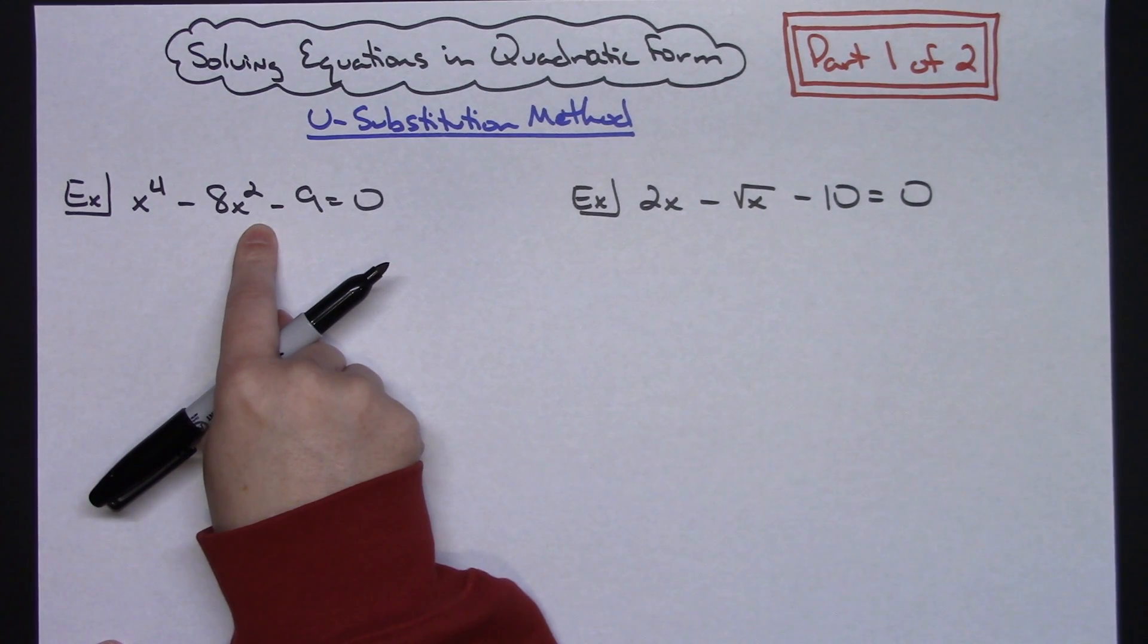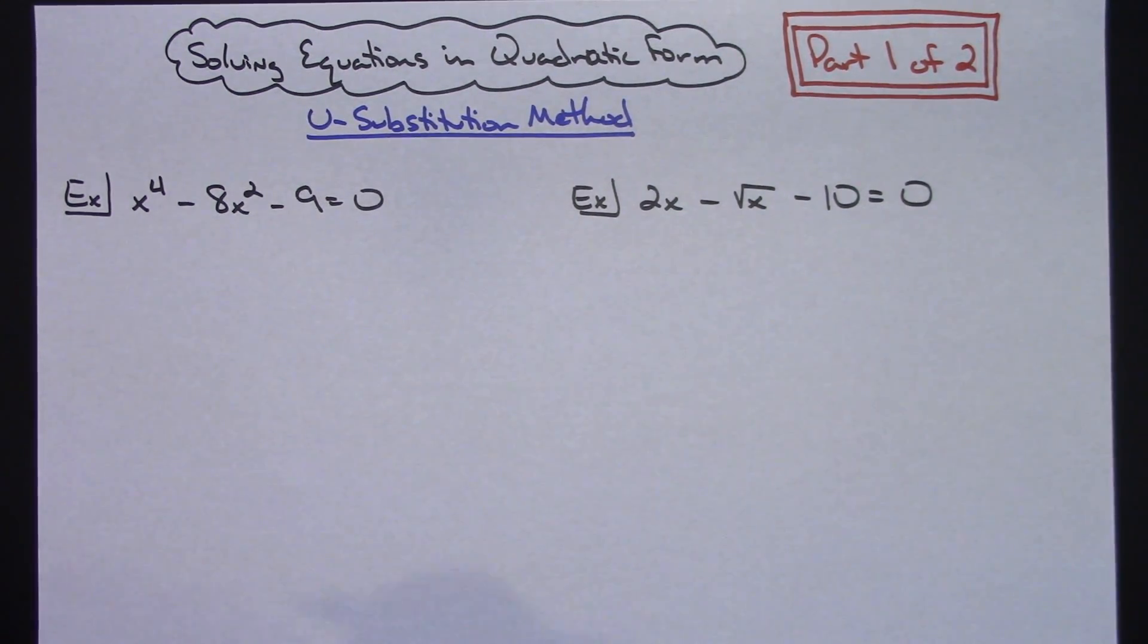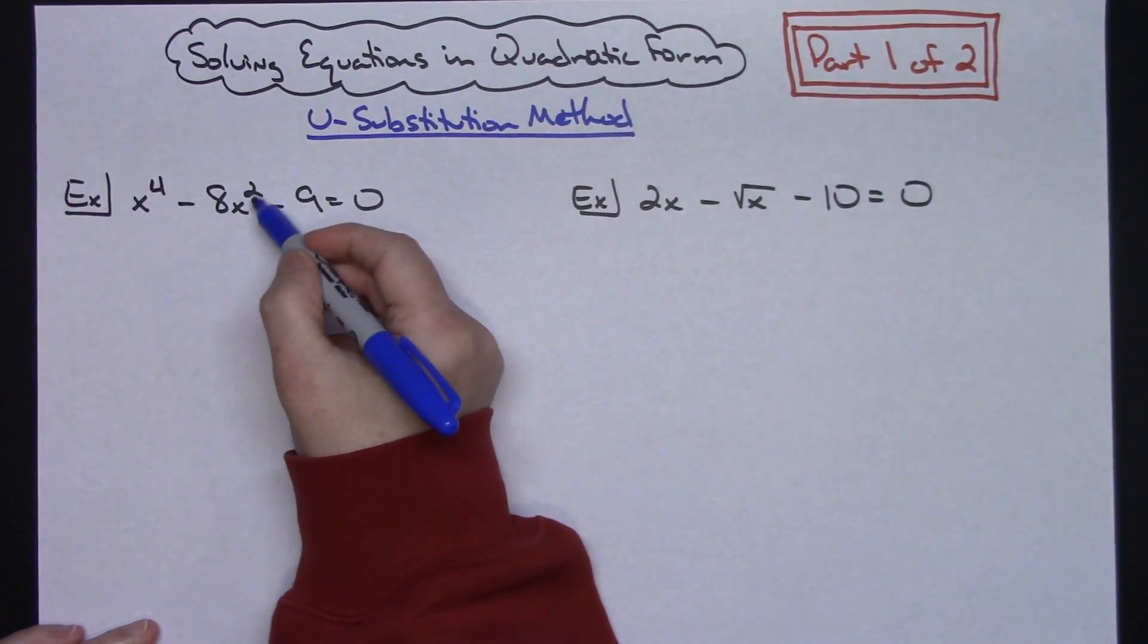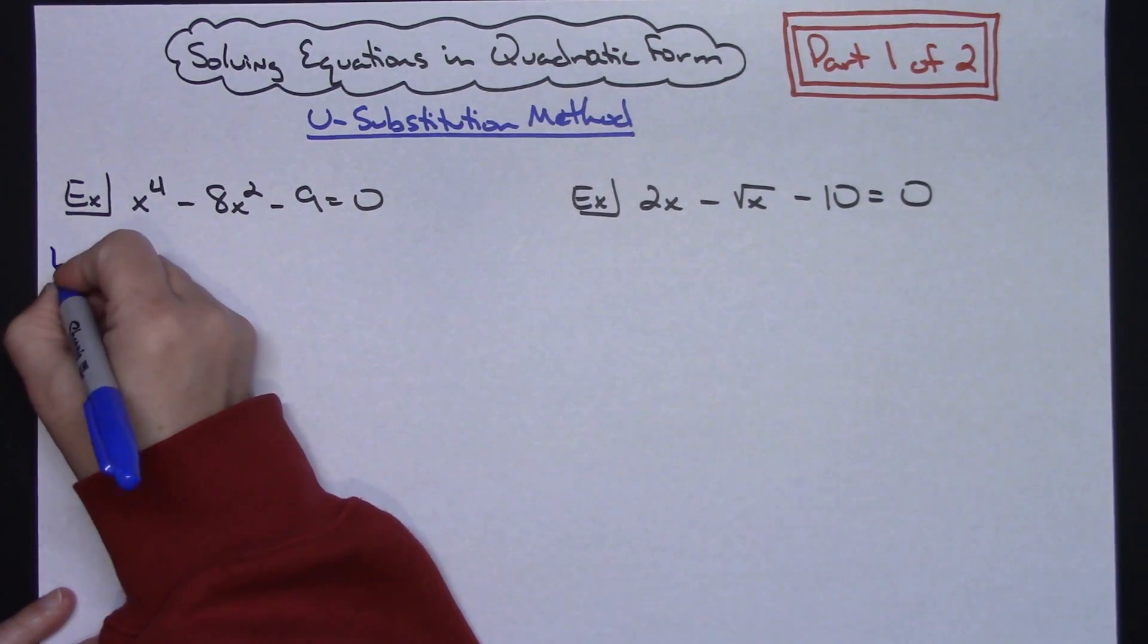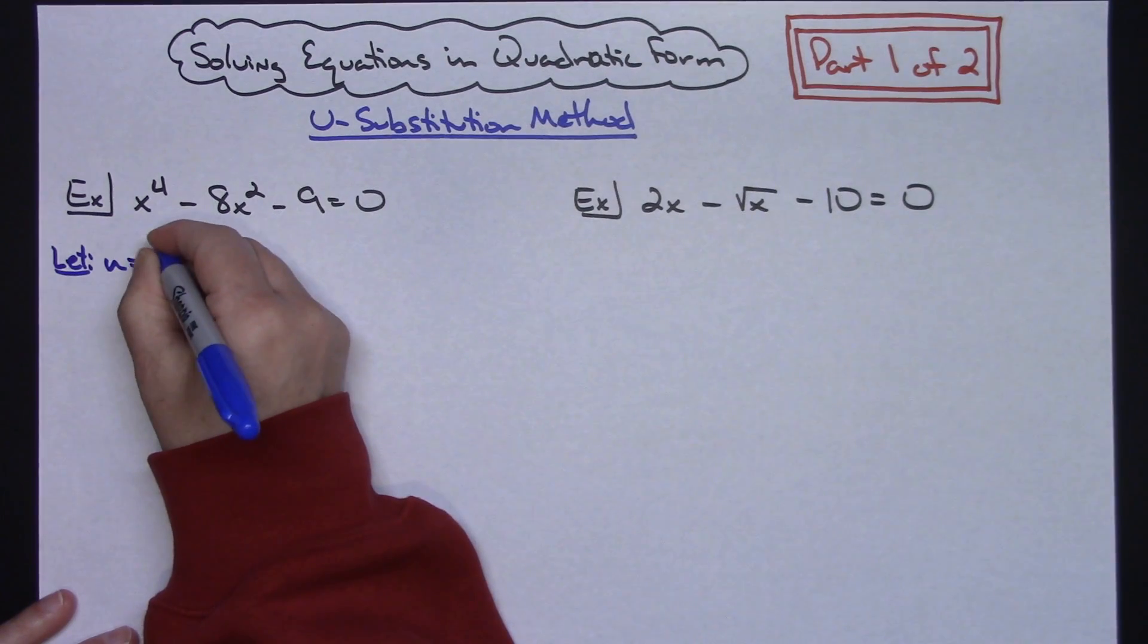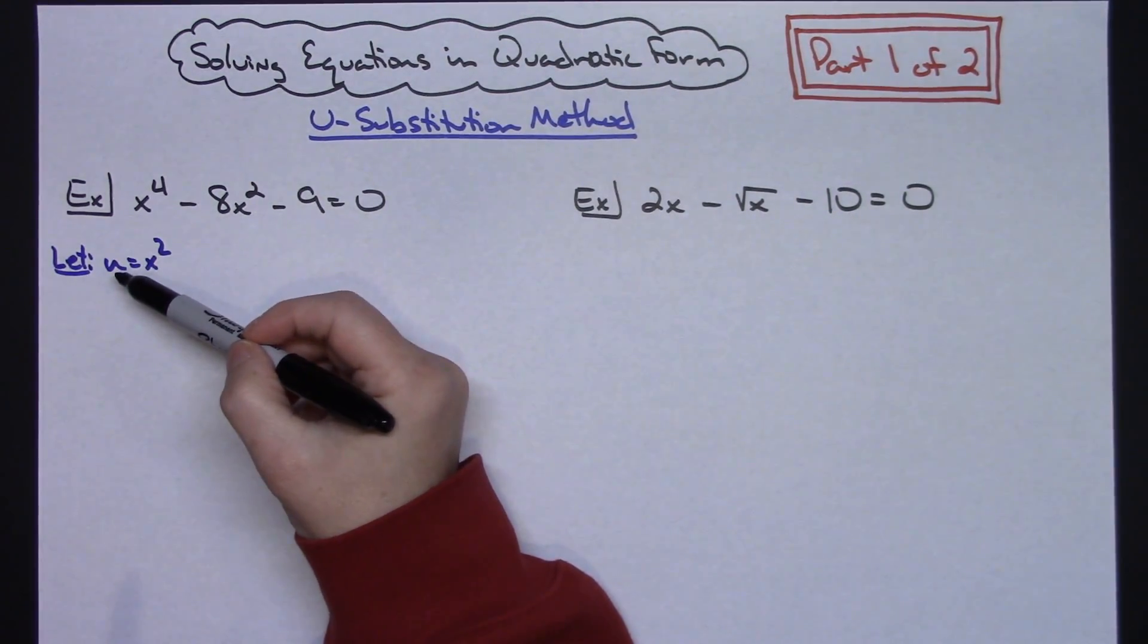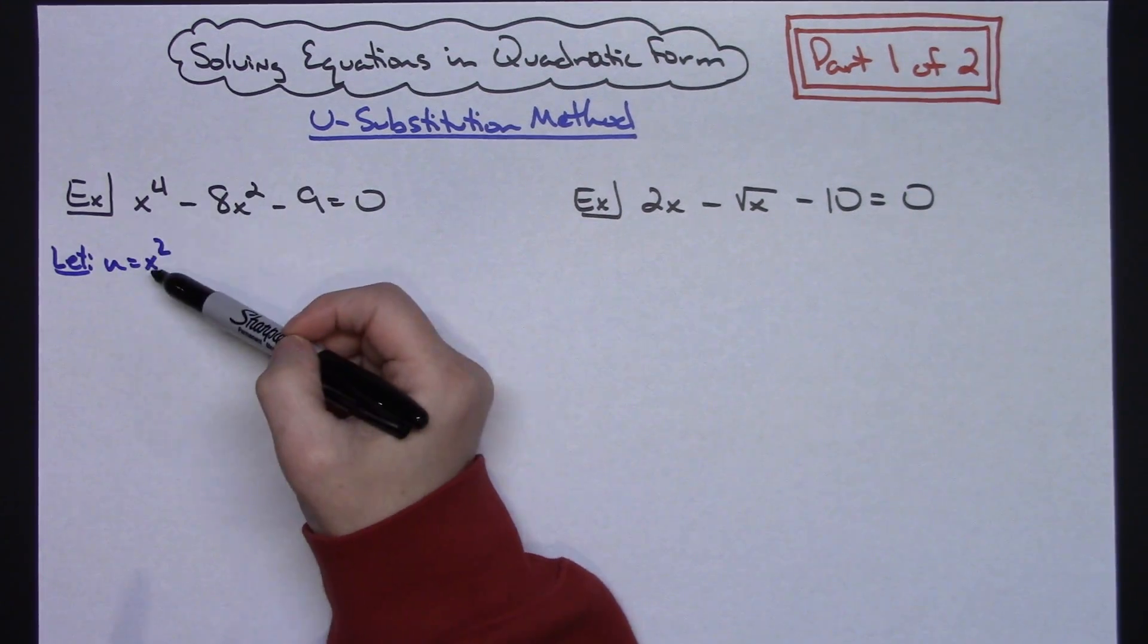So this is definitely an equation that is in quadratic form. I'm going to use u-substitution. I'm going to let my u be the variable in that middle term. So I am going to let u = x^2. Now when I do that, if you stop and think about this, I'm going to rewrite the equation in terms of u.